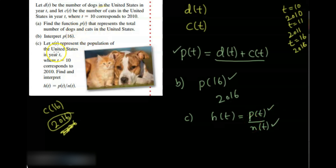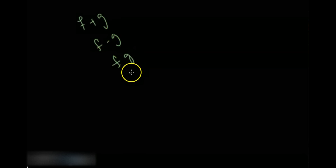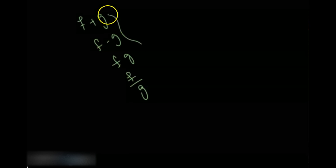The interpretation is: since n of t is the total population and p of t is the sum of dogs and cats, h of t represents the ratio of dogs and cats to the total population. This is how sum, difference, product, and quotient of two functions have many applications in daily life. Don't forget to like and subscribe to our channel.